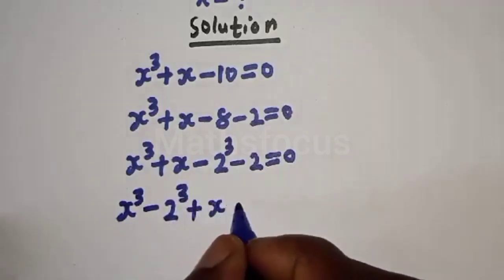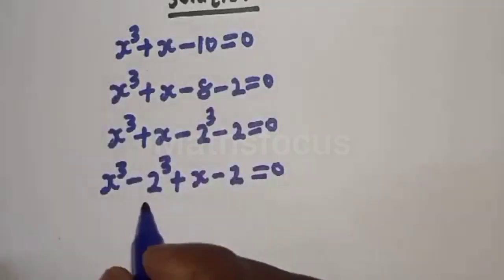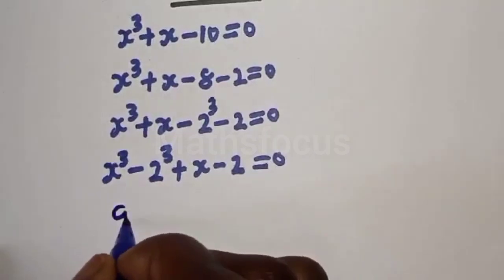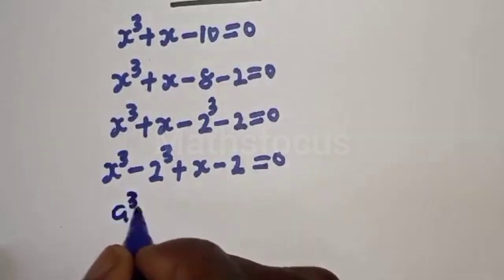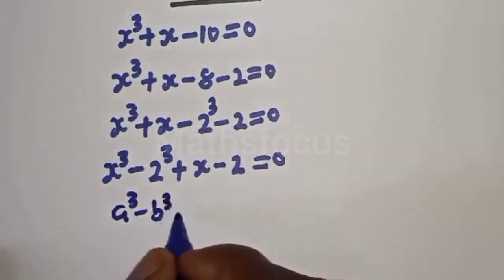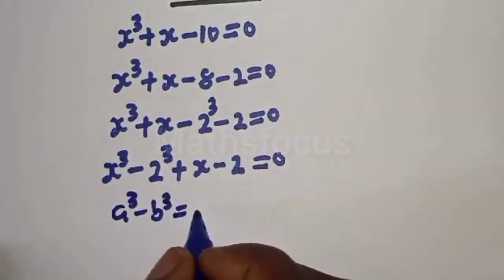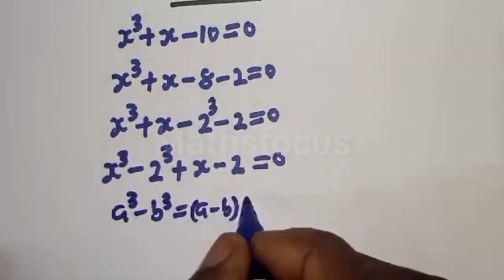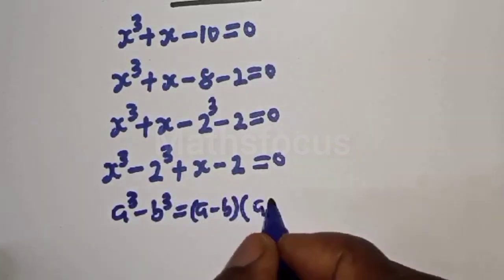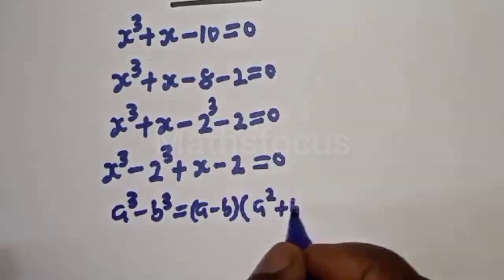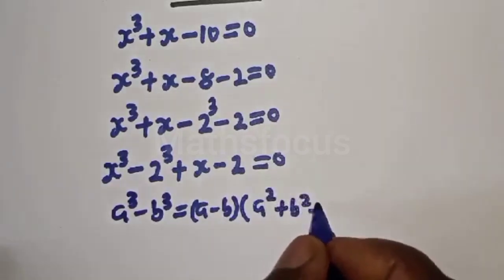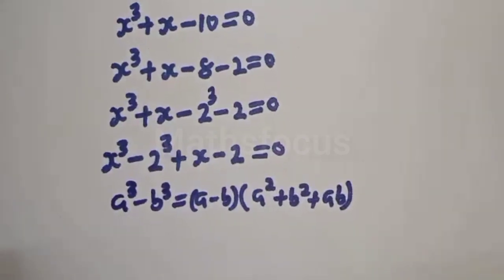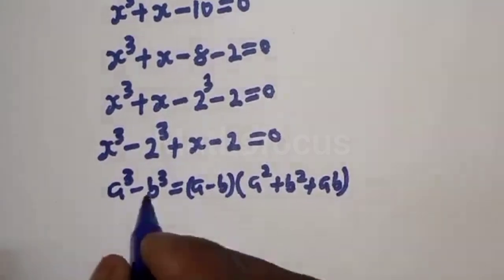Take note of this exponential rule: if you have a raised to power 3 minus b raised to power 3, this is equal to a minus b, bracket a squared plus b squared plus ab.